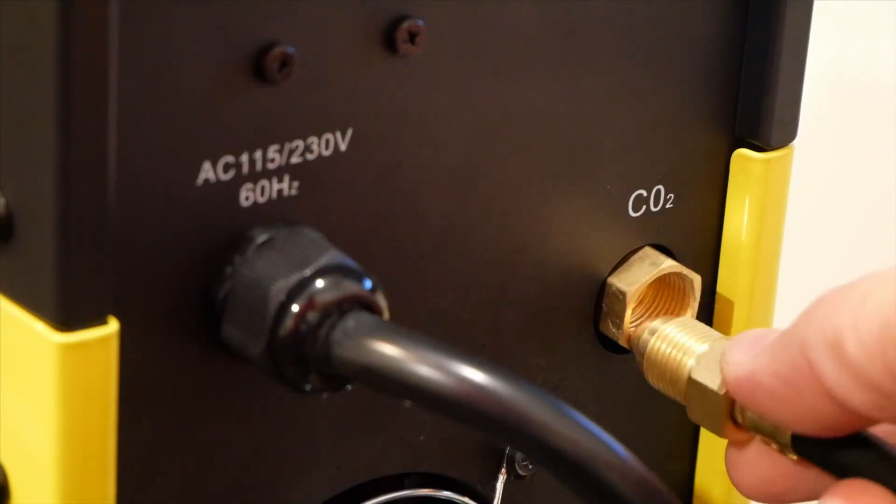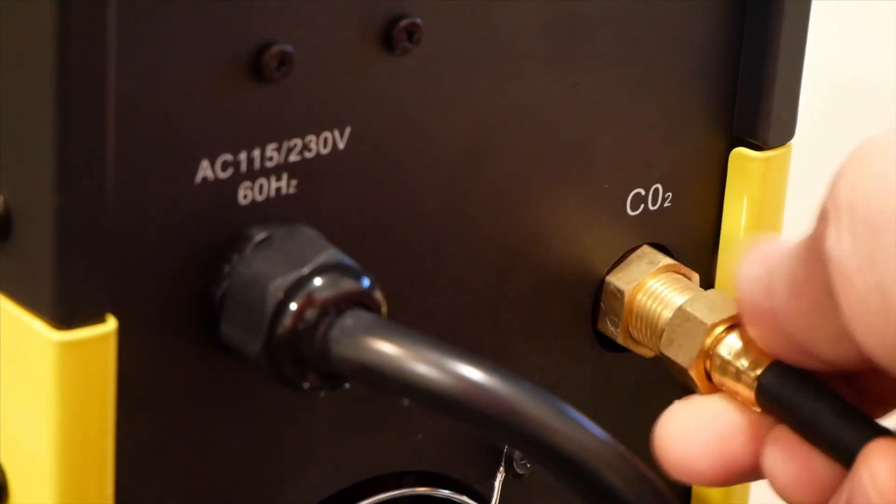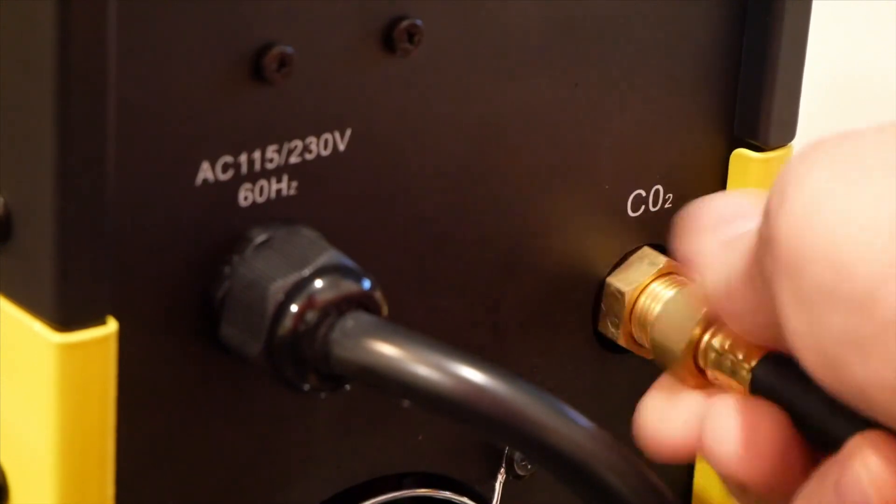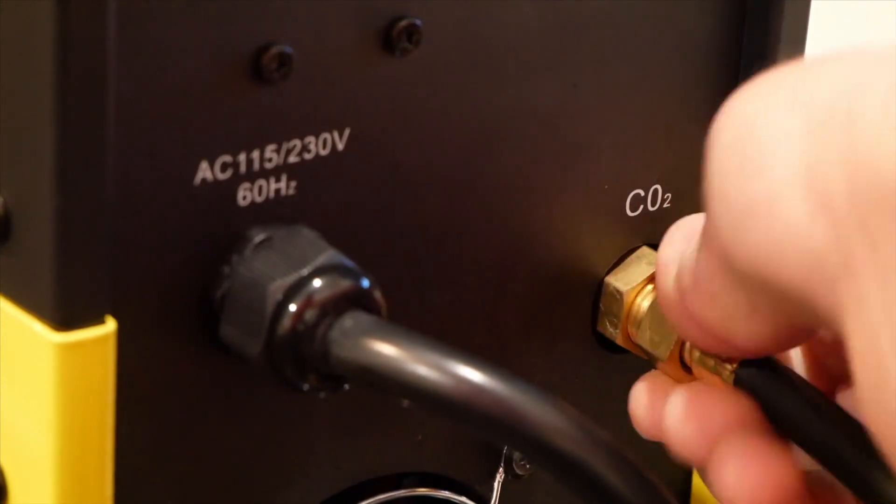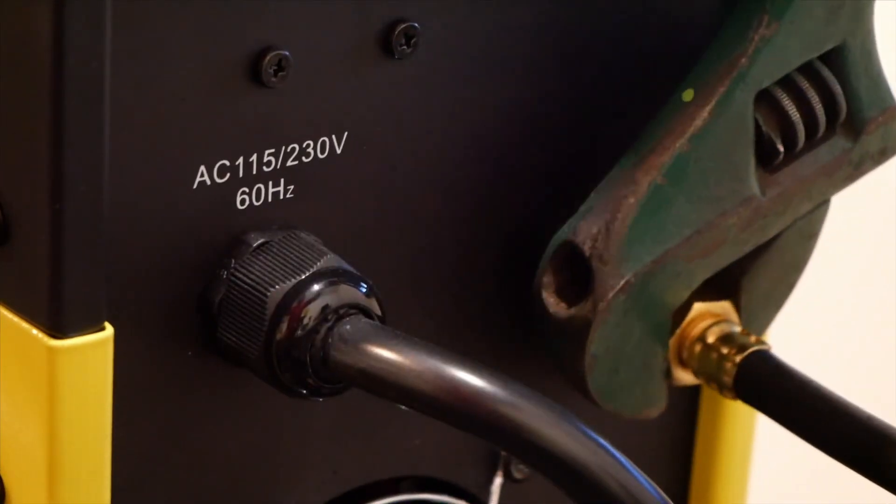The gas hose is a ball and socket design, so it won't require any Teflon tape. Simply install the threaded connector and tighten it down with a wrench. Be sure not to over-tighten.